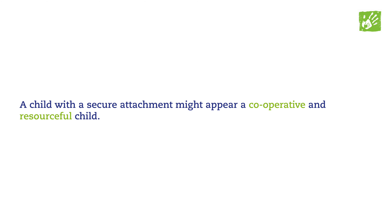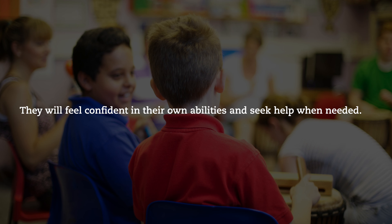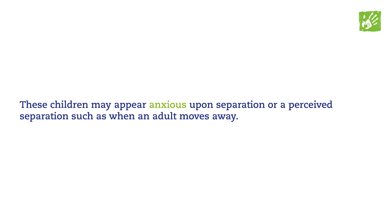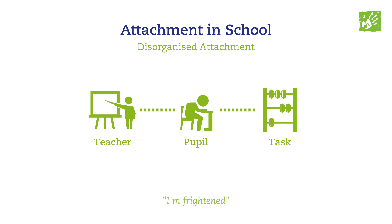For example, a child with a secure attachment might appear cooperative and resourceful — someone who is resilient and seeks help and interaction in an age-appropriate way. They may feel confident in their own abilities and seek help when needed. Whereas a child with insecure attachment might present as being overly reliant on others, unable to ask for help or unwilling to accept help if offered. These children may appear anxious upon separation from an adult, even if that's just an adult moving away to help another child. It's possible that children with insecure attachment may seek or reject close proximity to adults and peers, and they may be easily distracted or distracting of others in the classroom, as well as academically underachieving.